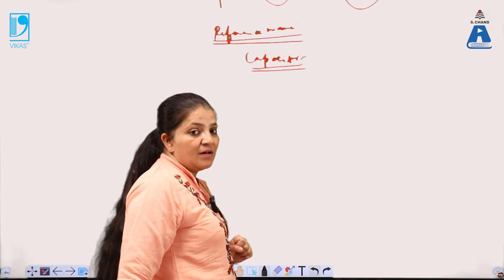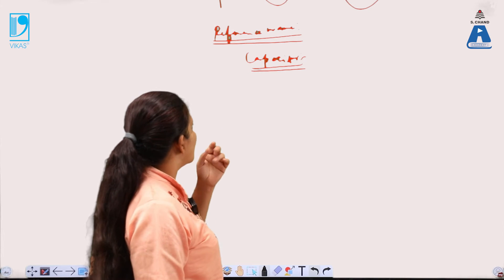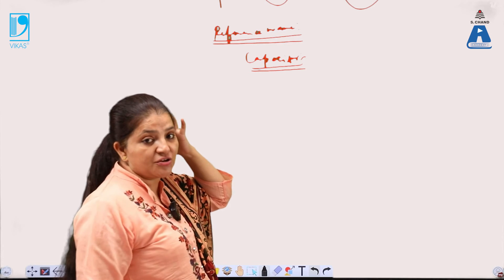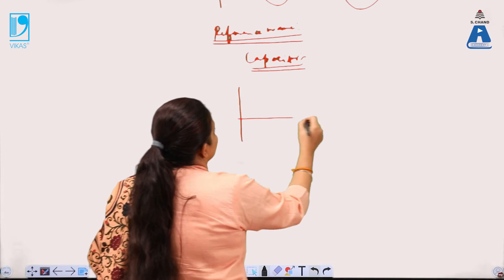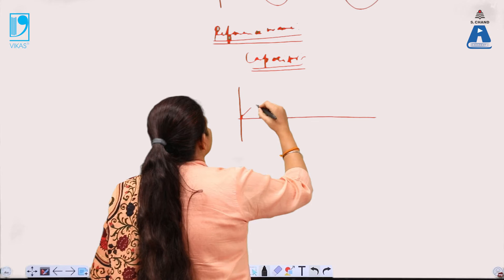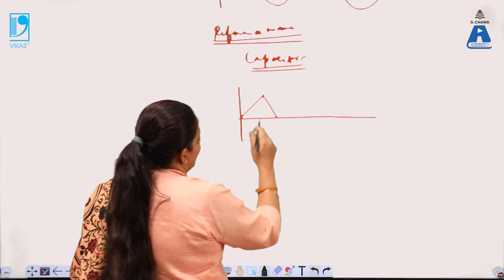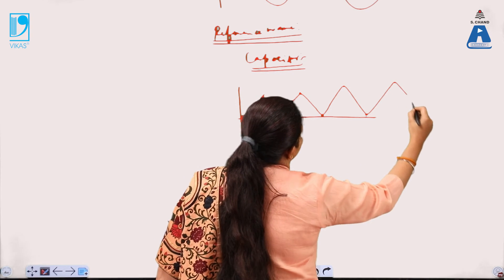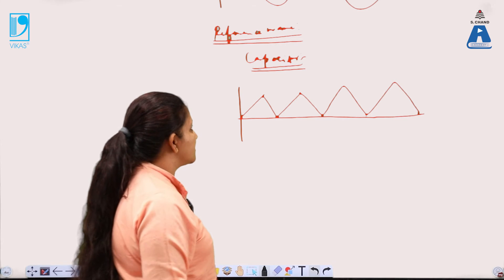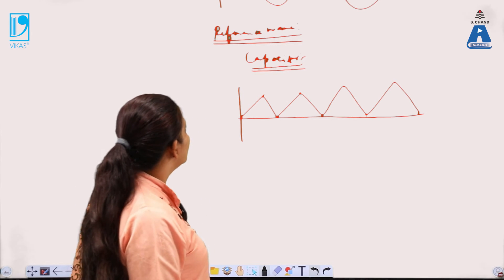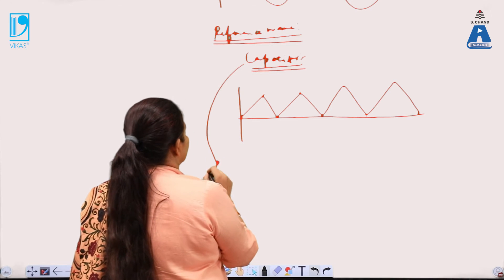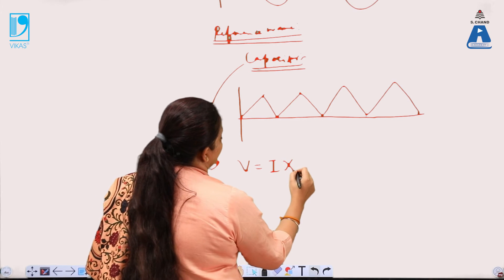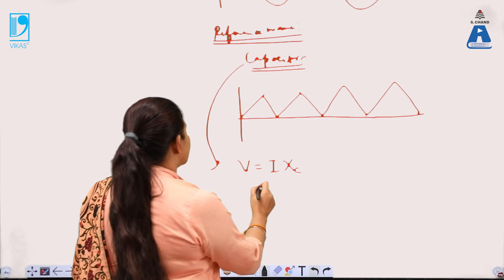Now in the case of a capacitor, the reference wave can be represented with a linear variation showing the charging and discharging of the capacitor. If this represents the charging of the capacitor, then during discharging there is again charging and discharging. This charging and discharging pattern is called the reference wave in the case of a capacitor.